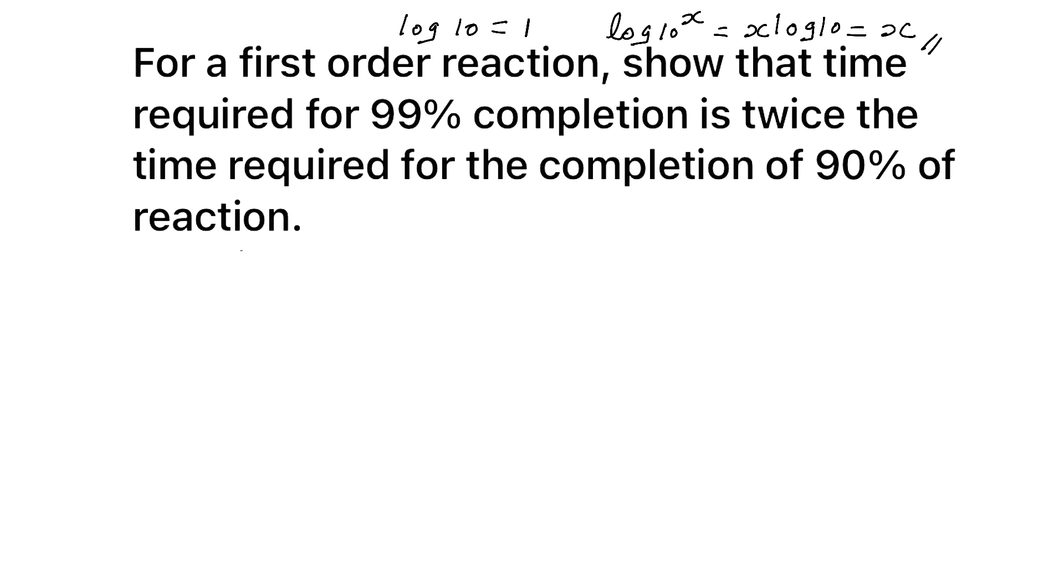Now what we have to prove? The time taken for 99% completion is two times time taken for 90% completion for a first order reaction. Or we are supposed to prove that T99% by T90% is equal to 2. So if you find ratio of these two times, you are supposed to get 2.